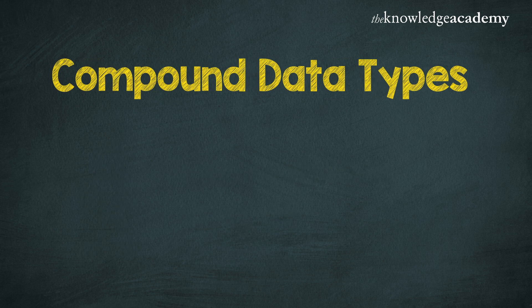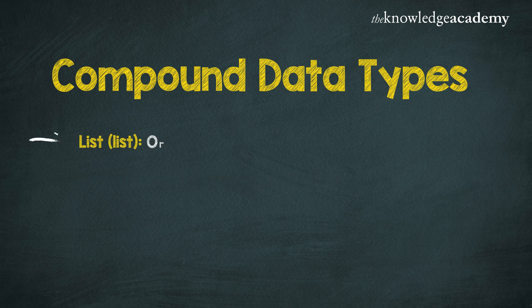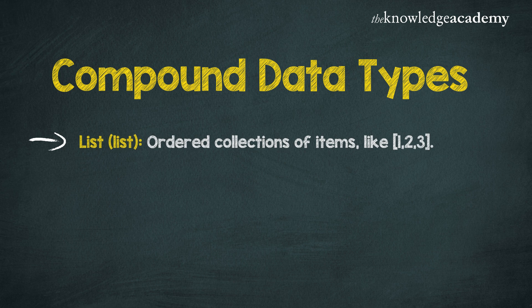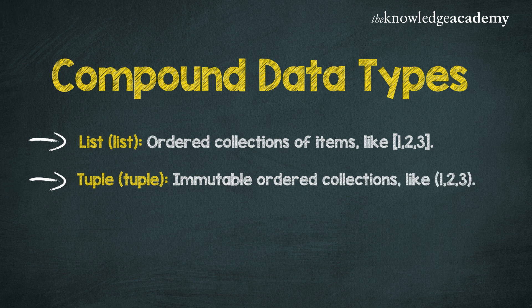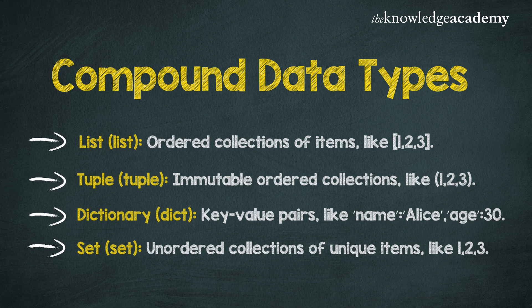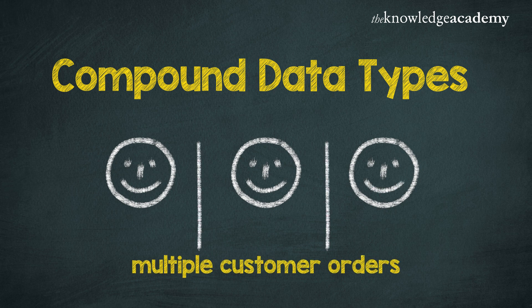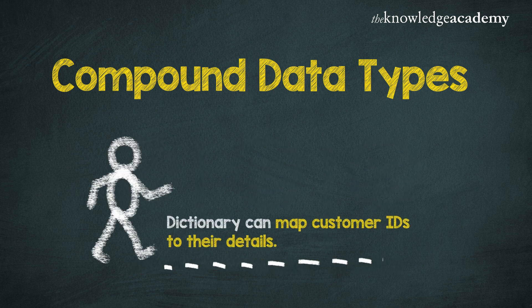Compound data types can hold multiple items and are used to structure and organize data. Types include lists, which are ordered collections like [1, 2, 3]; tuples, which are immutable ordered collections like (1, 2, 3); dictionaries, which are key-value pairs; and sets, which are unordered collections of unique items. For example, a list can store multiple customer orders, while a dictionary can map customer IDs to their details.